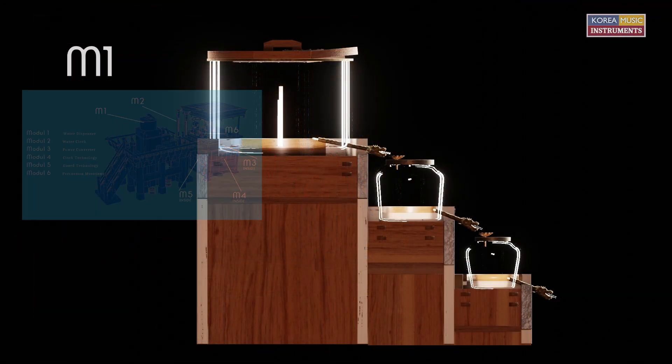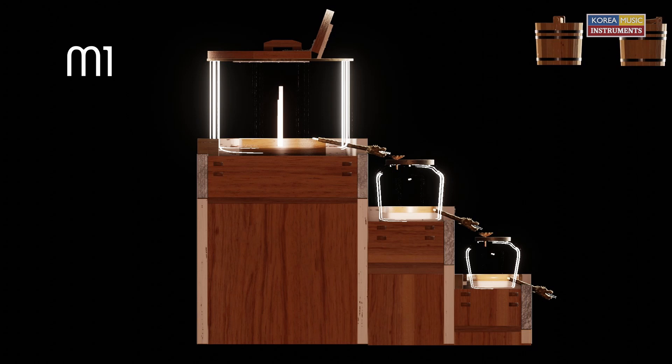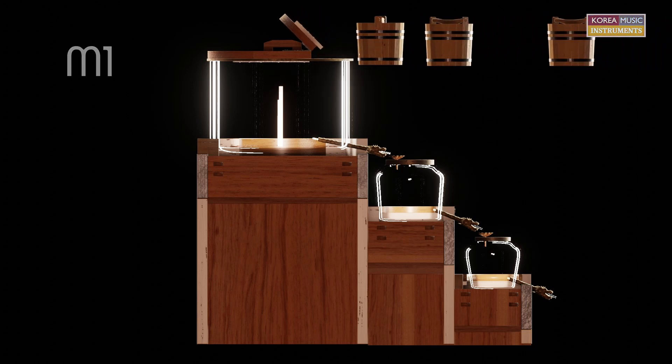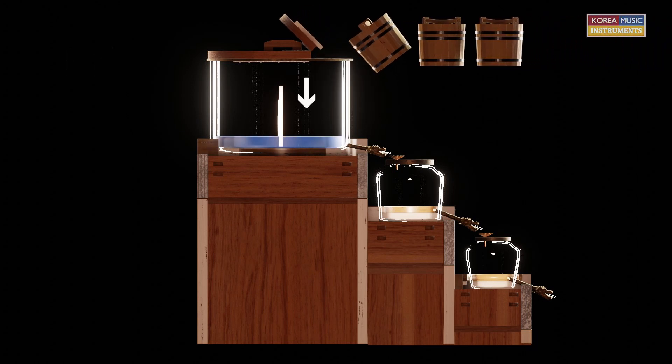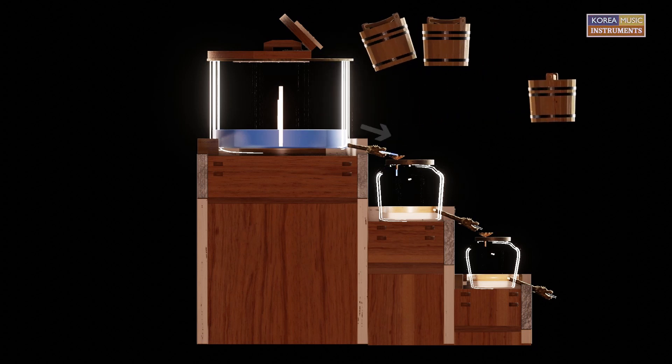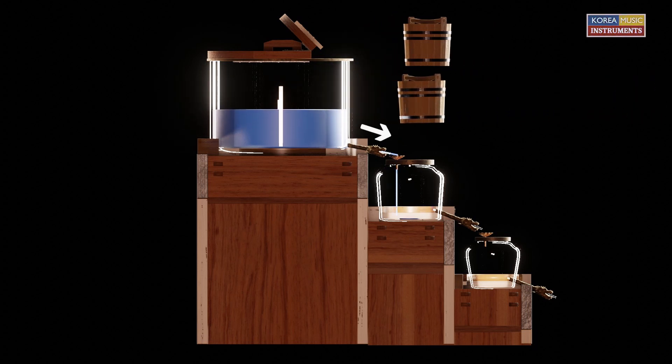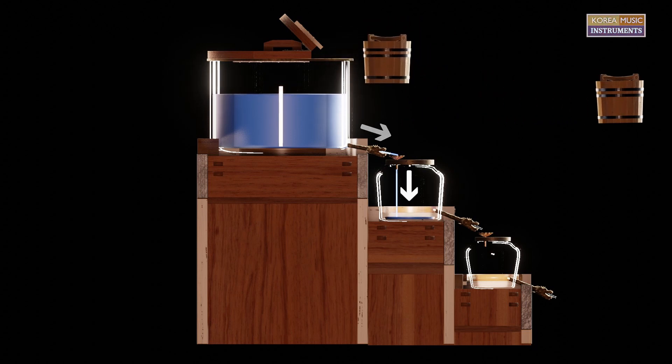Module 1. On the tower, which can be reached by a ladder or stairs, there are three containers. The top container is filled with water. The water flows through a pipe into the middle container, which works as a balancing container.